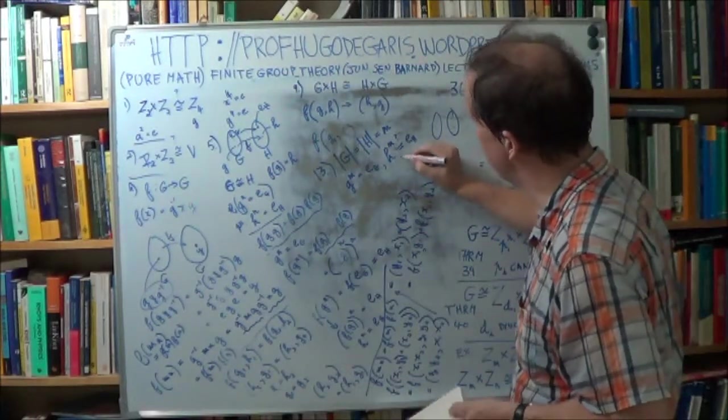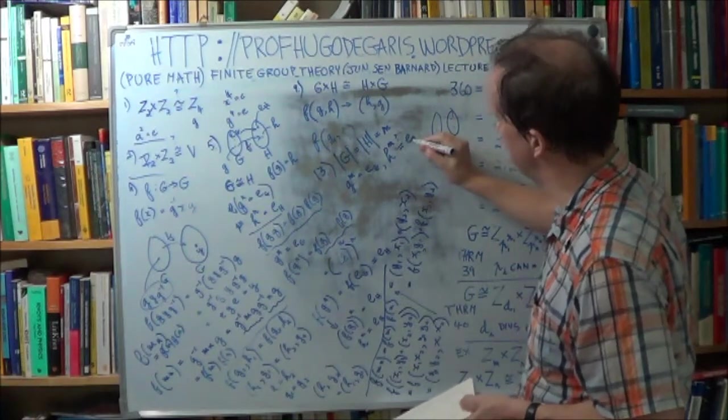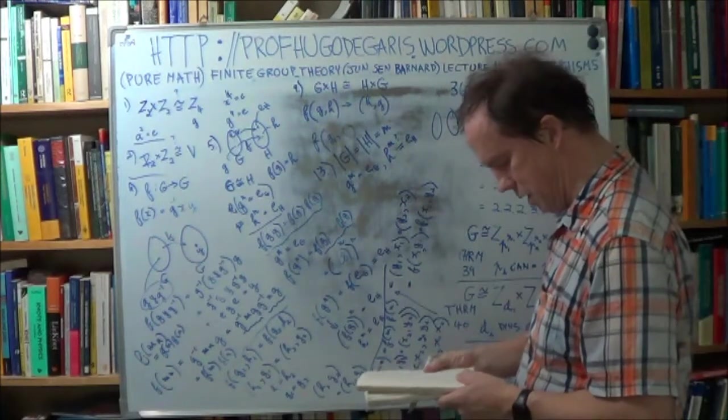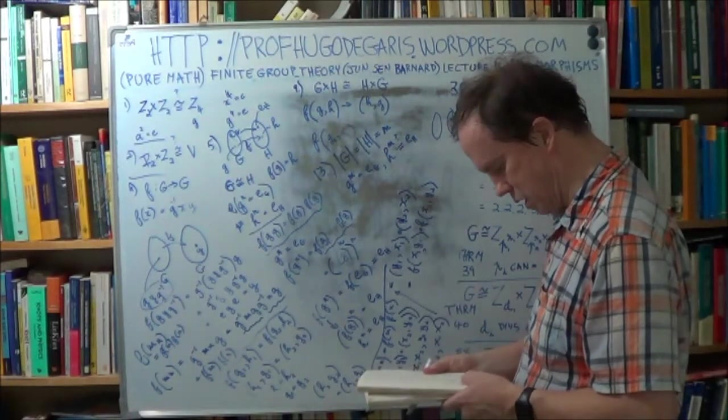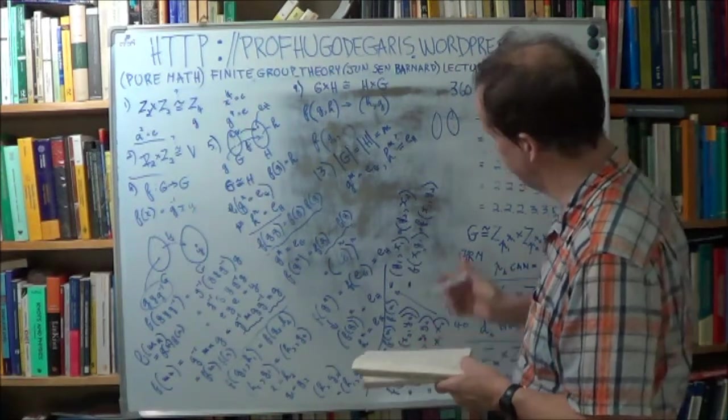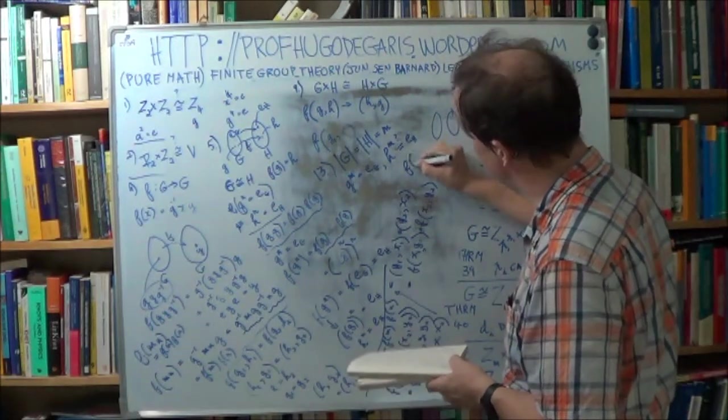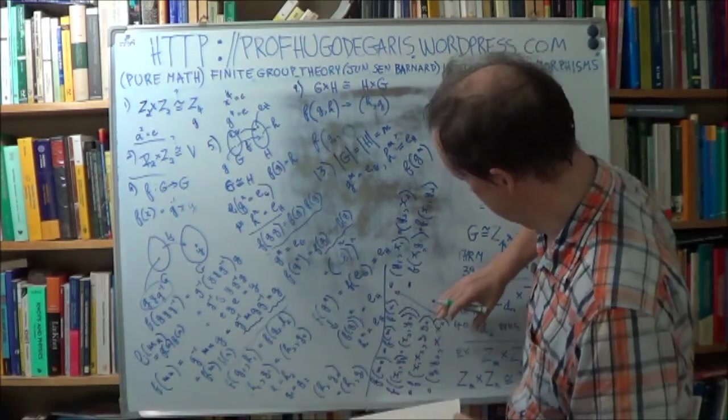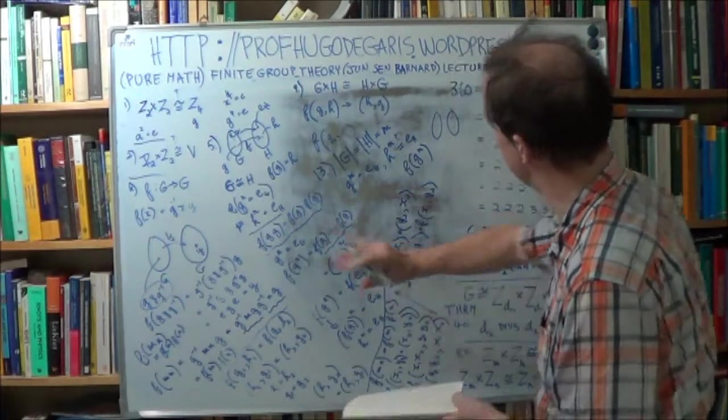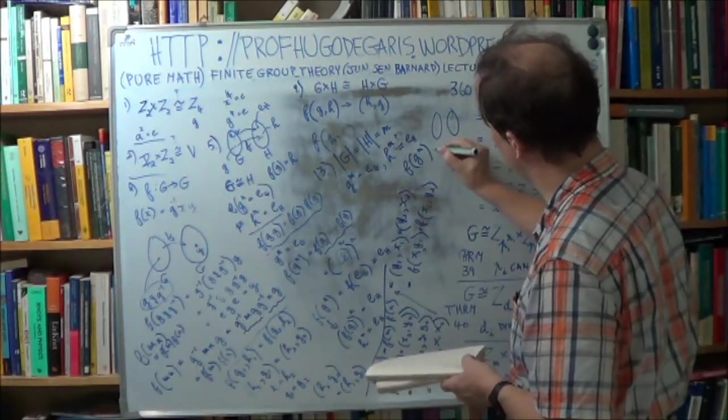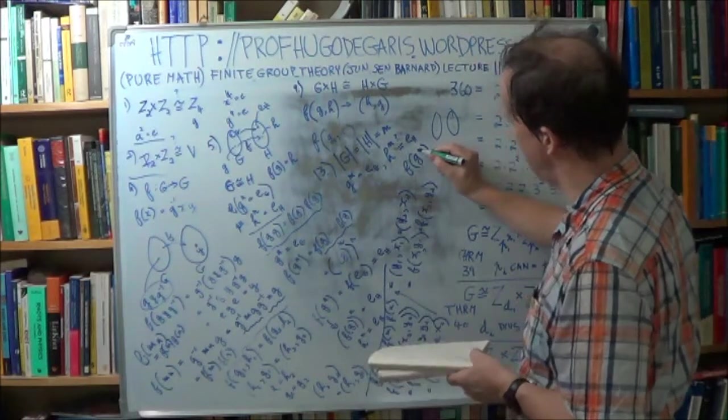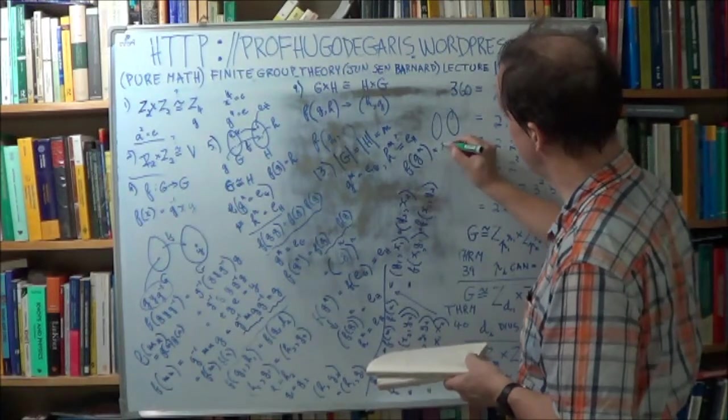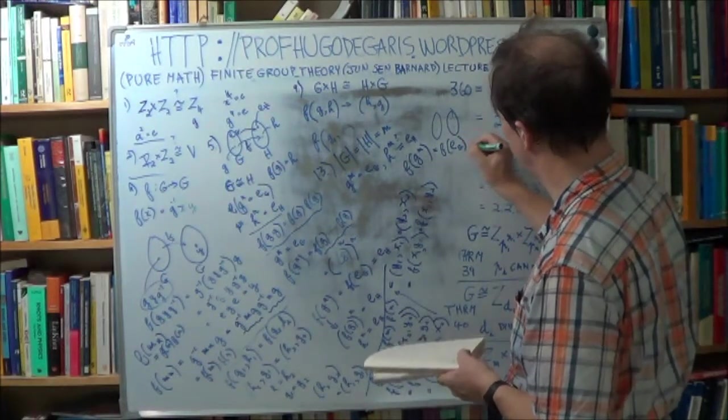So it boils down now to showing that h to the m is, in fact, the unit of big H. So how can we do that? Well, let's try something like this. So f of g to the m, it's similar to what we did here, in fact, it was almost the same. So now, g to the m, m is the order of g, and it's also the order of the generator. So this is the same as e to the g.